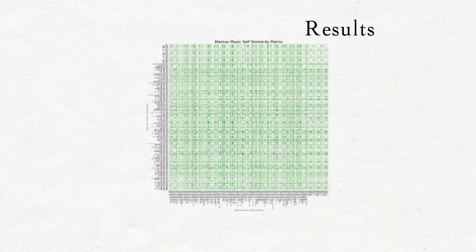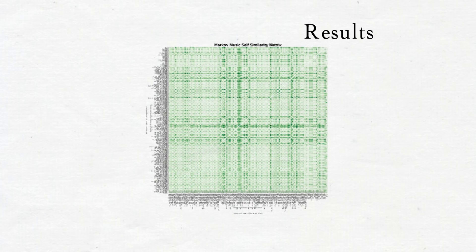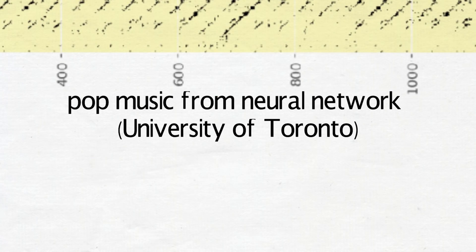And the results are telling. Before the self-similarity matrix, my machine produced sounds that had no internal repetitive structure. But after copying the structure, we now begin to see the boundaries in my generated music. Compared to this, the pop music made by a neural network is unable to capture those segments in music.